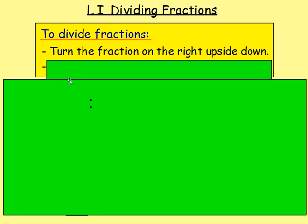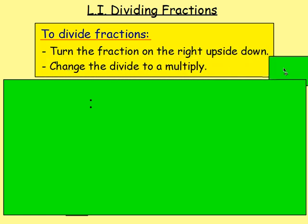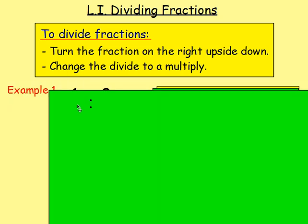So if you have one half, that becomes 2 over 1. If you have 5 over 4, that becomes 4 over 5. If you have 2 over 17, that becomes 17 over 2. Just turn the fraction upside down. Once you do that, all you do is change the divide sign to a multiply sign and work through it, just the way we did in the last lesson.